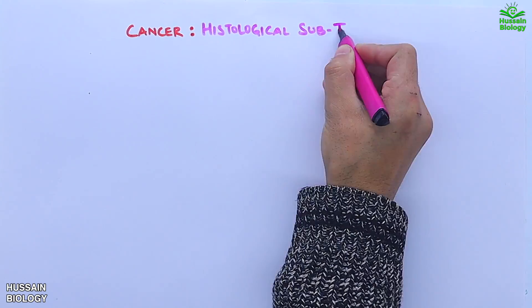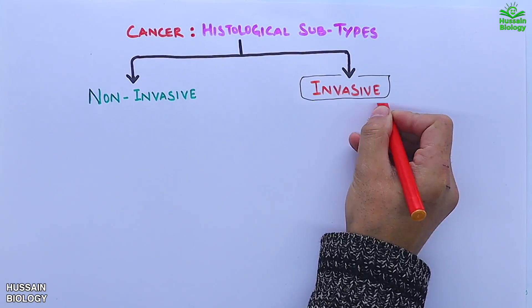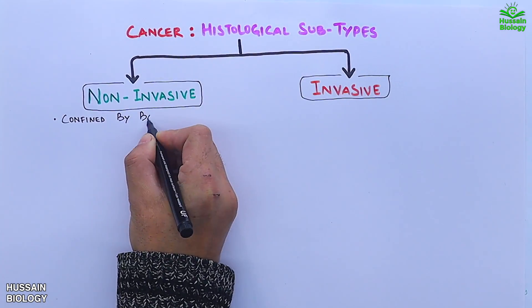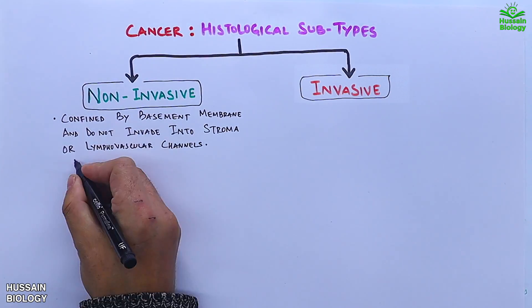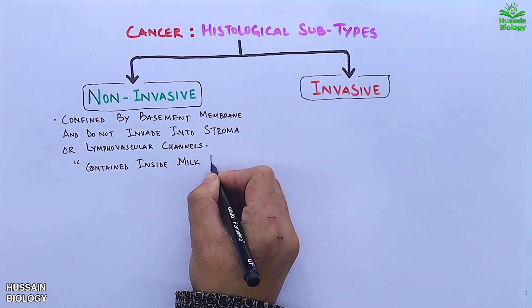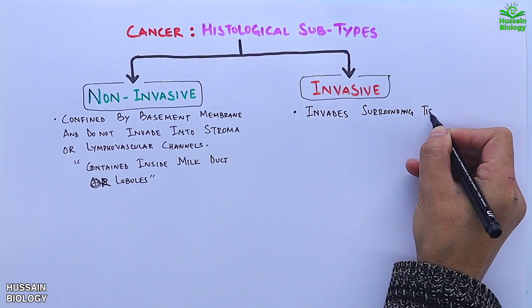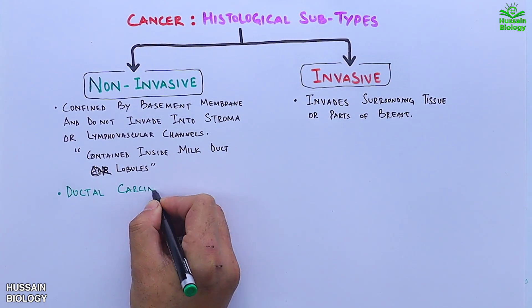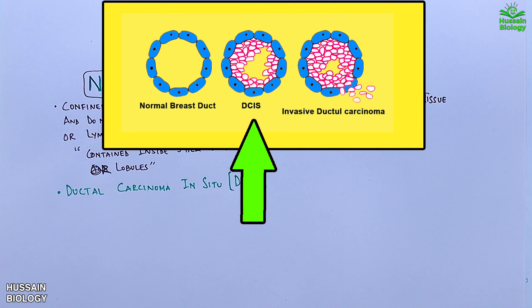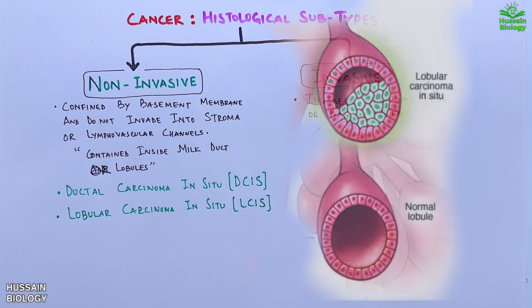Now let's classify the cancers into various subtypes. First are the histological subtypes, which we can classify into non-invasive and invasive types. The non-invasive type is confined by the basement membrane and does not invade into stroma or lymphovascular channels — meaning the tumor is contained inside milk ducts or lobules. The invasive type invades the surrounding tissue or other parts of the breast. Non-invasive has further types like ductal carcinoma in situ (DCIS), as shown in the diagram, where cells abnormally grow inside the ducts.